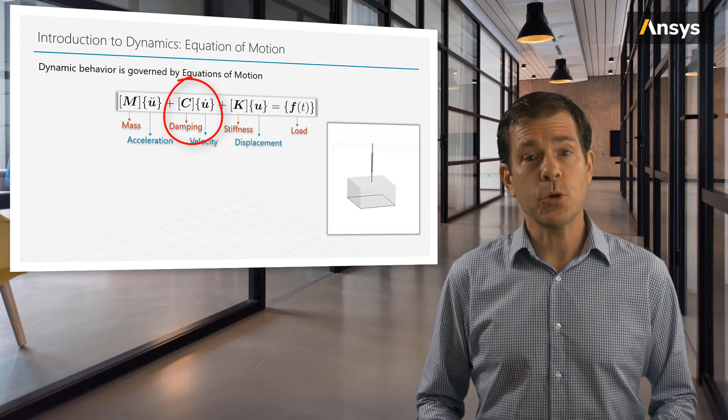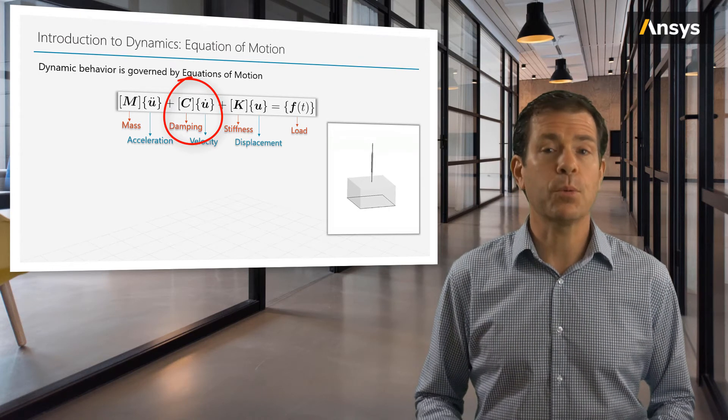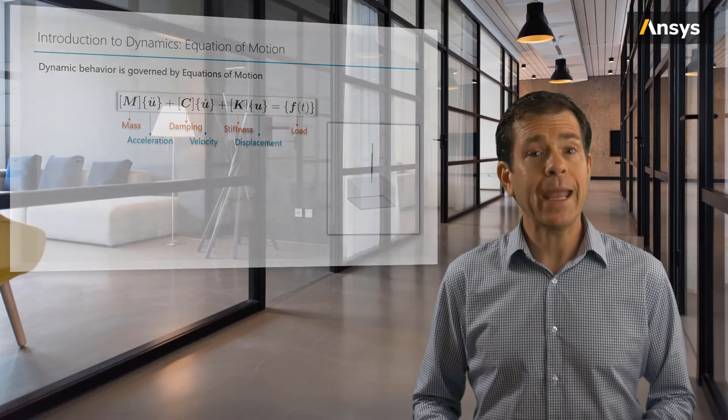So damping dissipates energy from a dynamic system. In our equations of motion, we see the damping force is proportional to the velocity. Think of your hand in the water of a swimming pool. Move slowly is easy, but faster requires higher forces. And in our roller coaster example, the wheels are typically made of urethane. Those wheels help absorb or dampen the harsh vibrations of the ride. We will cover damping in more detail in the following section.